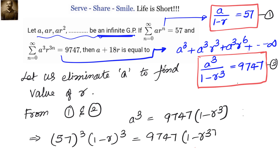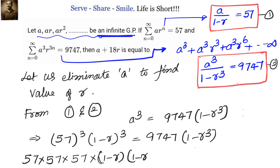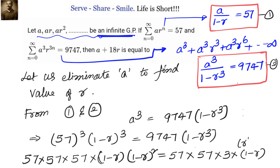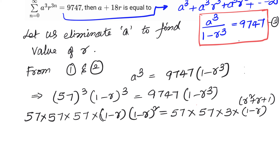Now we can factorize this and get a quadratic equation. 57³ is 57 × 57 × 57. (1 minus R)³ can be written as (1 minus R) times (1 minus R)². From the right-hand side, we take (1 minus R) as common. 9747 equals 57 × 57 × 171, which can be written as 57 × 57 × 3 × (1 minus R) × (R² + R + 1), using the identity A³ minus B³ = (A minus B)(A² + AB + B²). So we get (1 minus R)(R² + R + 1).